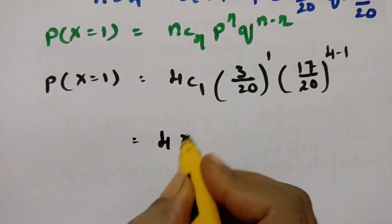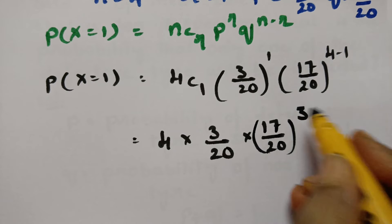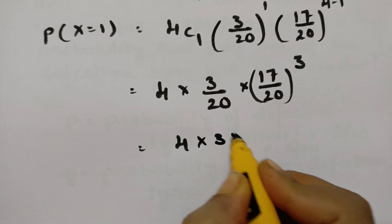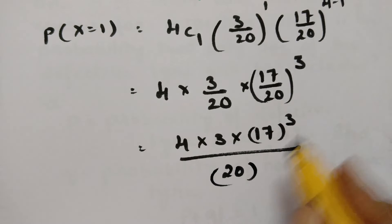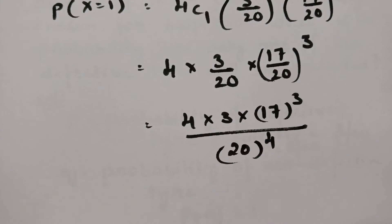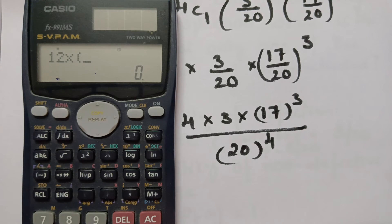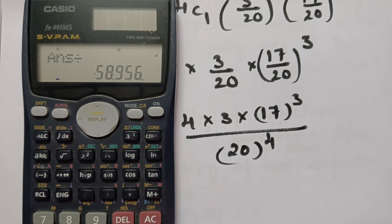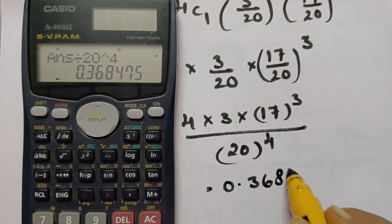4C1 equals 4. So the expression becomes 4 × (3/20) × (17/20)^3, which is 4 × 3 × 17³ divided by 20⁴. This equals 12 × 17³ divided by 20⁴. Computing this gives the value 0.368475.